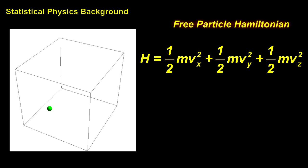The classic example is free atoms, where the Hamiltonian has three squared coordinates in the formula: one-half mv sub x squared for the x direction, one-half mv sub y squared for the y direction, and one-half mv sub z squared for the z direction.